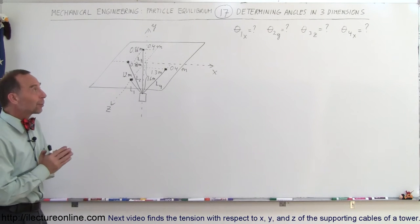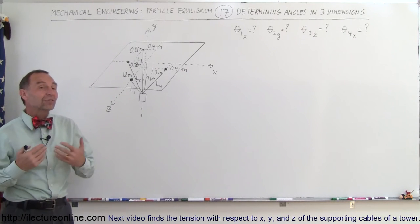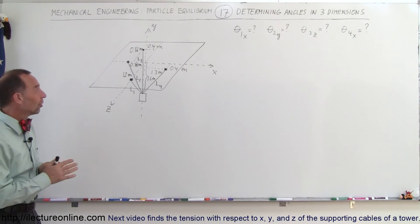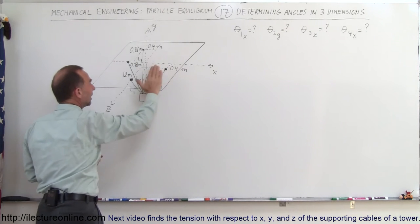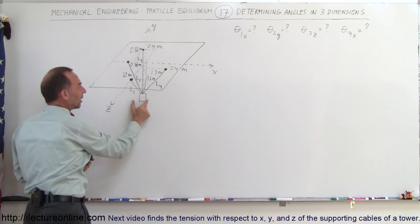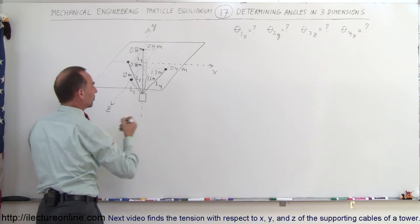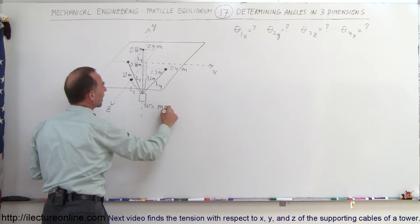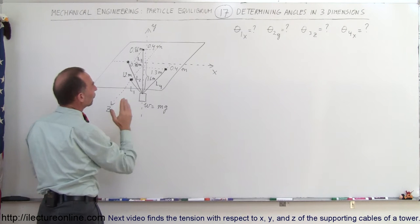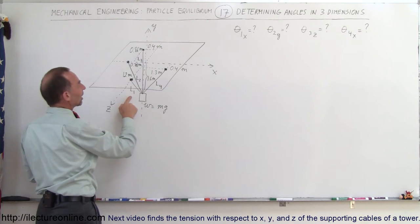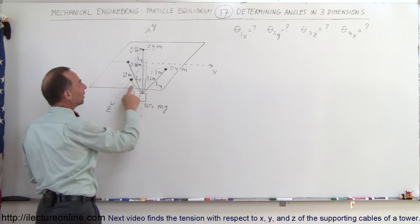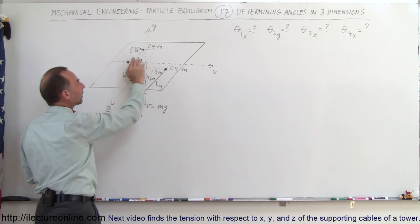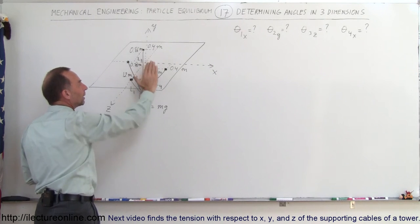Welcome to ElectronLine. Here we're going to do another exercise in how to determine angles in three dimensions. Imagine we have a plane, and suspended from that plane is an object with a certain amount of weight, where weight equals mg. It's suspended by four cables with lengths L1, L2, L3, and L4. All cables are connected to some point on the plane.